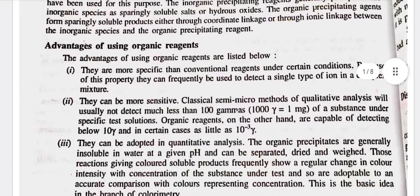Advantages of using organic reagents: They are more specific than conventional reagents under certain conditions. Because of this property, they can frequently be used to detect a single type of ion in a complex mixture. They can be more sensitive. Classical semi-micro methods of qualitative analysis will usually not detect much less than 100 gammas of a substance under specific test solutions. Organic reagents, on the other hand, are capable of detecting below 10 gammas and in certain cases as little as 10 to the power minus 3 gamma.